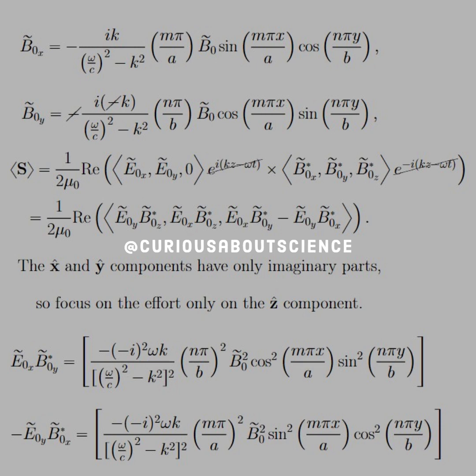And then E naught X with the complex conjugate of B naught Z, and E naught X, B naught Y complex, minus E naught Y, B naught X complex. Okay, we see it right now. Okay, so the X and Y components have only imaginary parts, so focus the effort on the Z component.